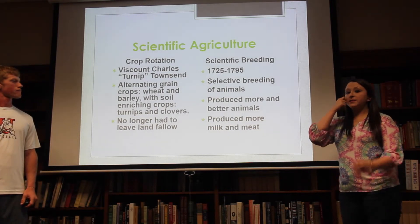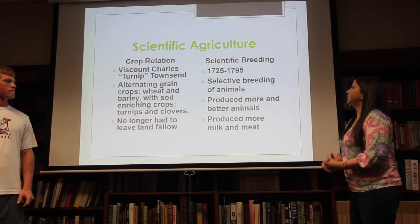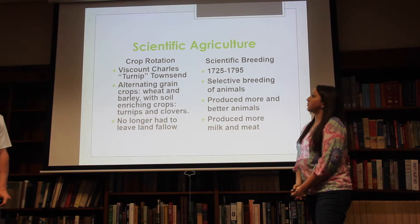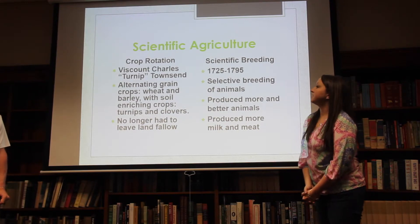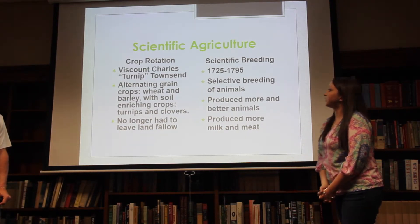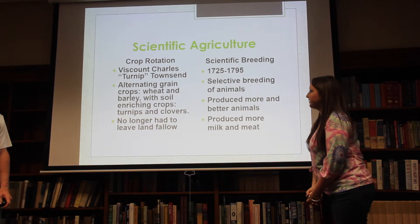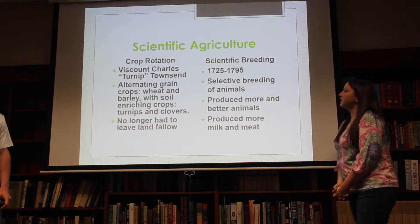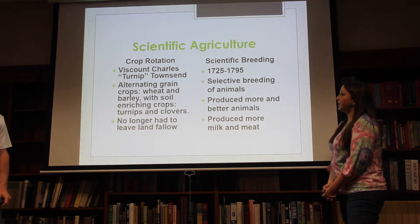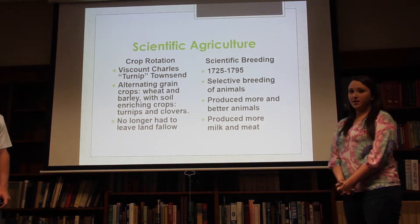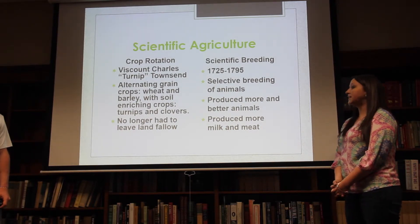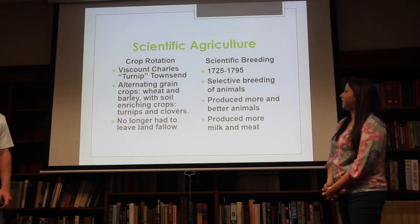Along with machinery, agriculture became more scientific. Crop rotation was invented by Viscount Charles 'Turnip' Townshend, alternating grain crops such as wheat and barley with soil-enriching crops like turnips and clover. This meant you no longer had to leave land fallow.